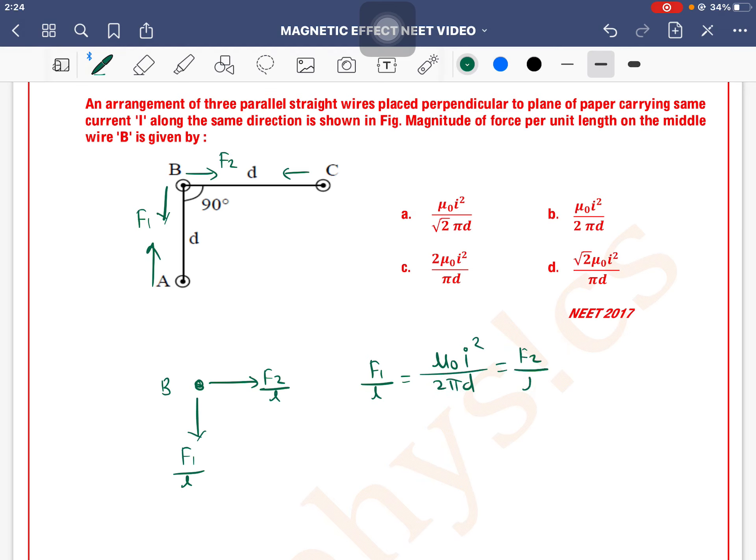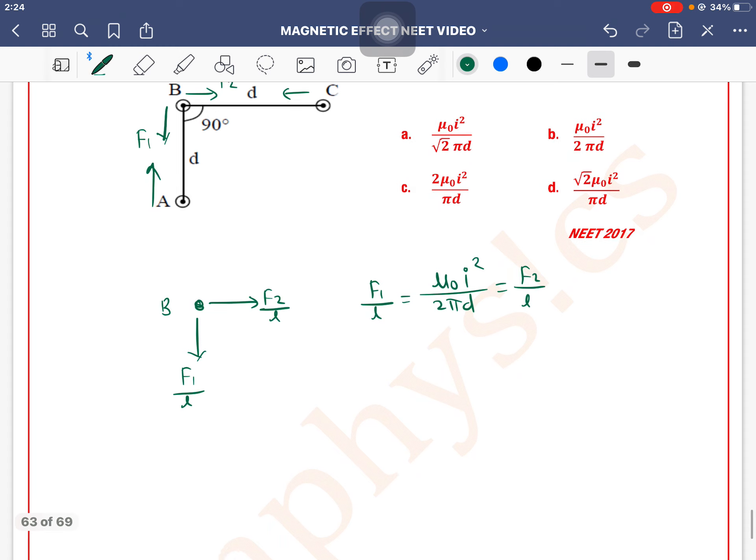F2 by L value is the same. This will be D, right? This will come F2 divided by L. So F1 by L, F2 by L, F2 by L value is the same. So this net force will come in this direction.